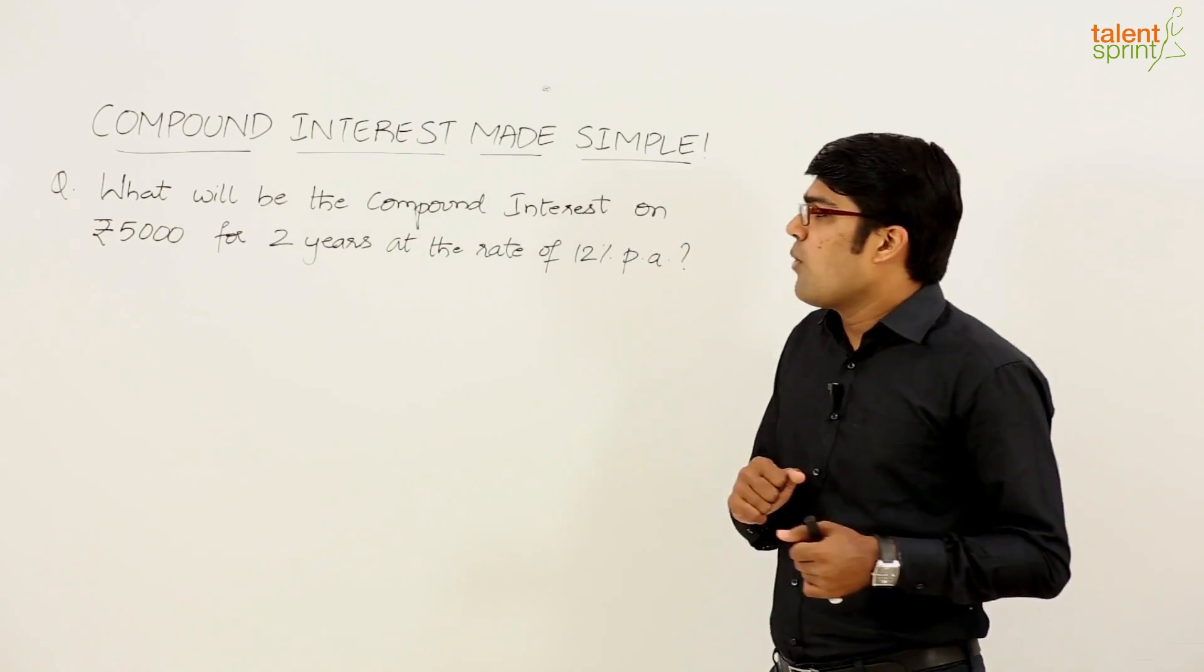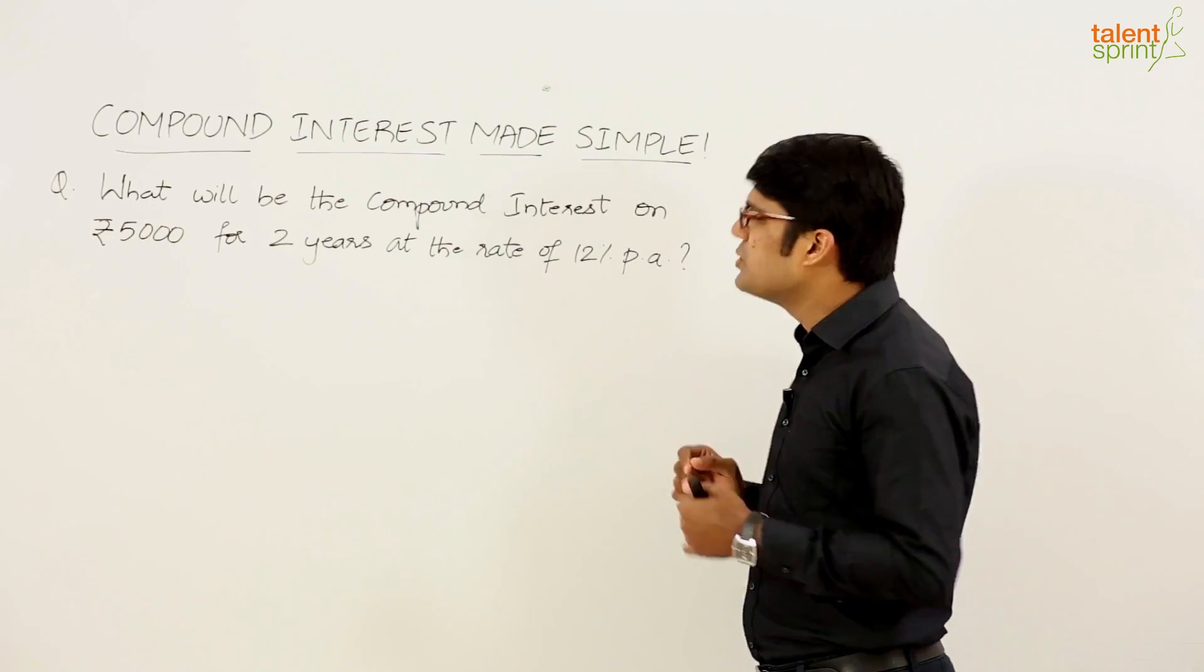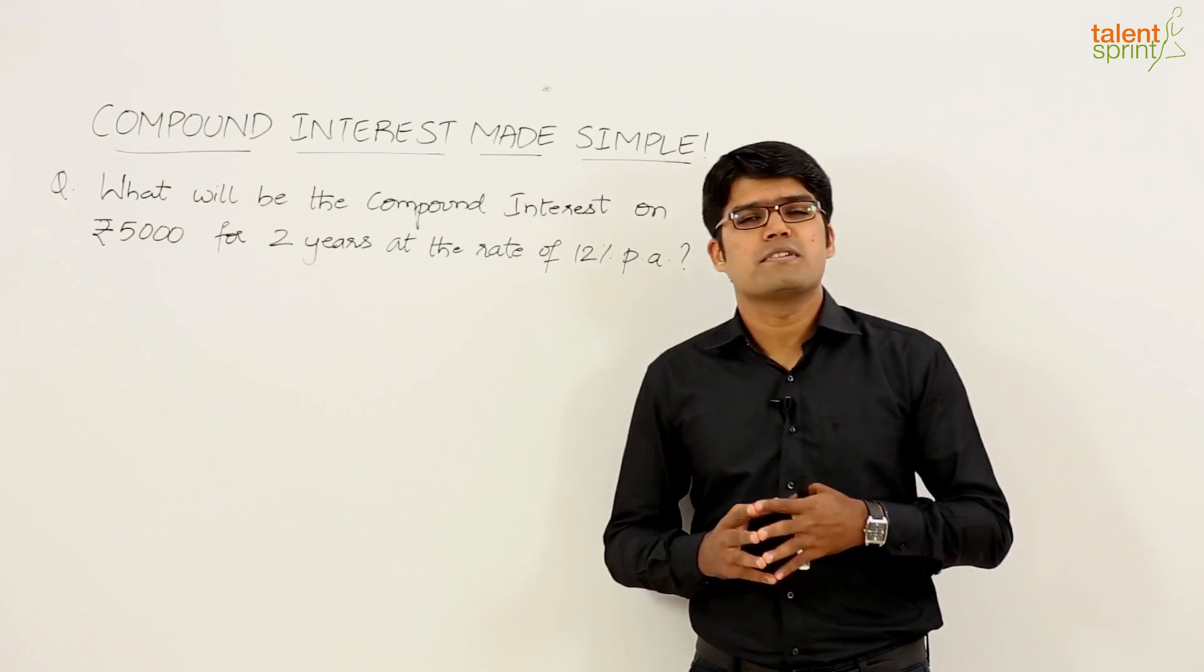Now, here is a question which says: What will be the compound interest on rupees 5000 for 2 years at the rate of 12 percent per annum?